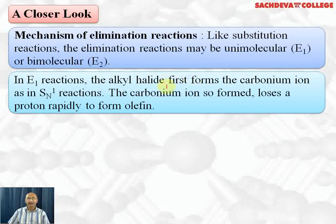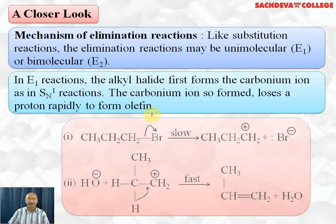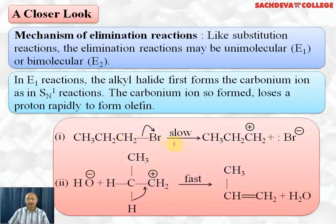In E1 reaction, the alkyl halide first forms the carbocation in the same manner as SN1 reaction. The carbocation then loses a proton rapidly to form alkenes or olefins. The first step is a slow step because the bond is being broken, and BR⁻ gets separated, giving a primary carbocation.